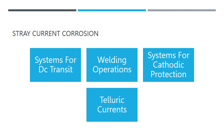Telluric currents are induced currents in metallic structures caused by disturbances in the earth's magnetic field. Due to mineral deposits or other physical or environmental factors, some structures may be more vulnerable to these effects. Significant sunspot activity may also be the source of these currents. The metallic pipeline is intercepted by the shifting magnetic field of the earth, which creates a voltage on the structure, and corrosion takes place where the current leaves the structure and enters the earth.